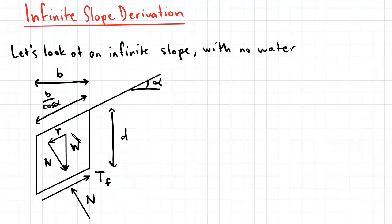Now we're interested in this force T because this is the force that is actually causing this soil element to want to slide down the slope surface. And this force is resisted by this force Tf here which represents the shear strength of the soil.